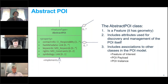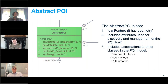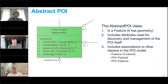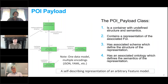We also have symbology — people are going to want to display this, and the POI owner may want to specify how you display it. It's an XLink abstraction pointing to symbology. We didn't try to determine what standard to use for symbology because that is somewhat out of our scope.